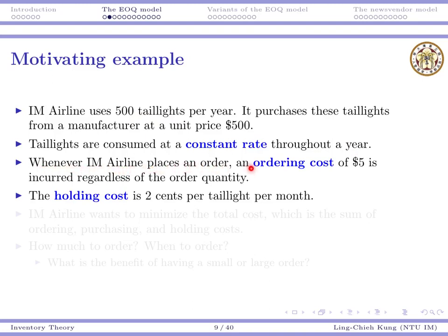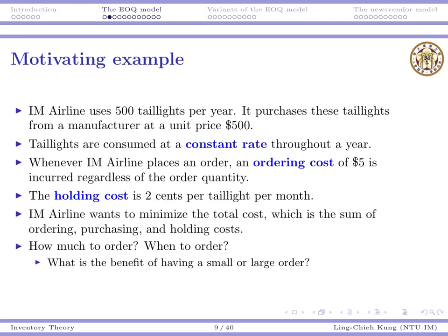When we place an order, there is an ordering cost of $5 incurred regardless of the order quantity — we can think of this as a processing or shipping cost paid to the supplier. The holding cost is two cents per taillight per month, since storing items in a warehouse incurs a holding cost. The problem is to minimize the total cost, which is the sum of ordering, purchasing, and holding costs for the 500 taillights.